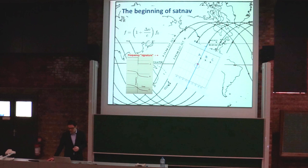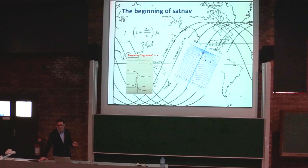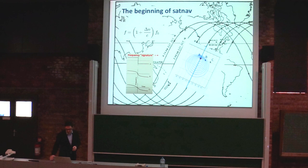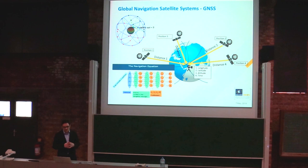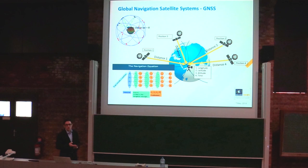Doppler was initially used to compute the satellite's position, but someone realized that if you transmit the satellite's position, you can use the reverse method to compute your own position. This became the Transit system in the 1960s, and over the decades evolved into modern satellite navigation. Modern GNSS is based on time of arrival: satellites transmit their position and a time reference, and a receiver uses measurements from four satellites to determine its 3D position and time.